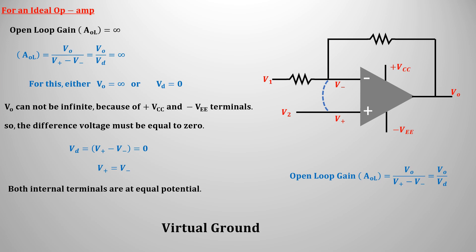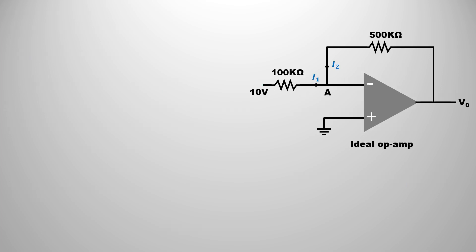This virtual connection is called the virtual ground concept. According to this, the internal inverting and non-inverting terminals of an ideal operational amplifier will be at the same potential. Now let's look at how this concept can be used in numerical problems. Consider a circuit diagram where the input voltage is applied to the inverting terminal — this is an inverting operational amplifier. The non-inverting terminal is grounded and the given operational amplifier is ideal, meaning open-loop voltage gain is infinite. Since the non-inverting terminal is grounded, node point A from the virtual ground concept should also be at zero potential.